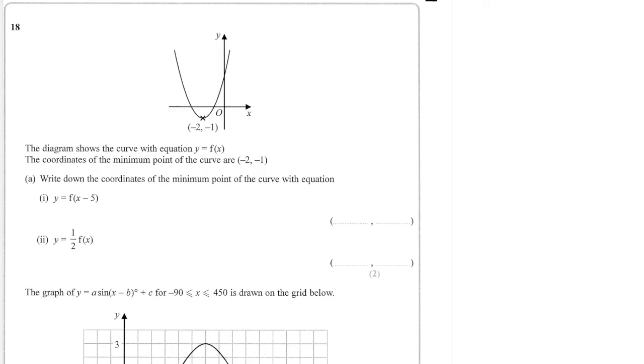Okay, next question. And we are moving this minimum point. f of x minus 5 means that you move 5 to the right. So the x-coordinate adds on 5, which is going to give me 3, minus 1. And we've got a half outside the bracket. So we're stretching in the y by a scale factor of a half. So the y-coordinate gets halved. So it becomes minus 1 over 2.